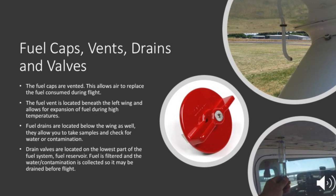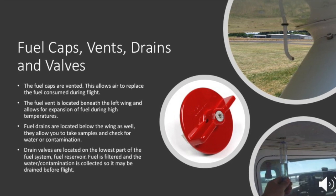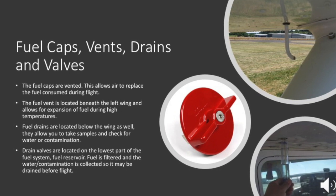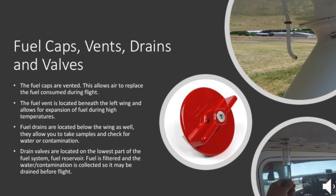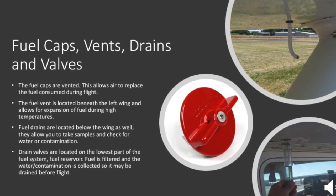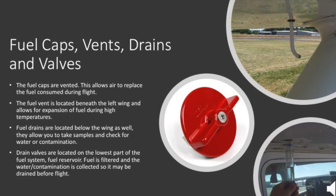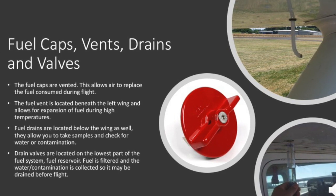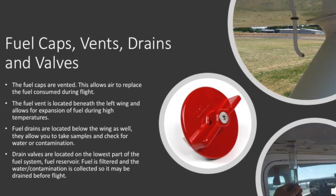There is a picture showing the fuel vent at the top right corner. Fuel drains are located below the wing as well, and they allow you to take samples and check for water or contamination. This is when we normally use a fuel sump to check for contamination of water in the fuel. There are also drain valves located on the lowest part of the fuel system, where fuel is filtered and water and contamination is collected so it may be drained before flight.